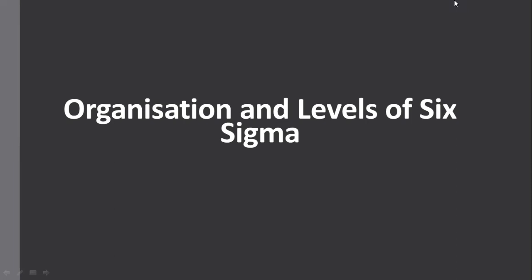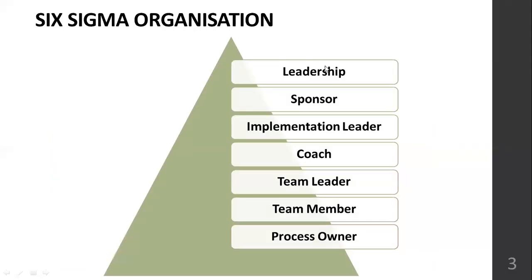Today we will discuss two topics: the organization of Six Sigma and the levels of Six Sigma. The levels include green belt, yellow belt, black belt, master black belt, and champion. The Six Sigma organization refers to how people with different levels, work experiences, seniority, and job positions function together within one institution when working on a Six Sigma portfolio.